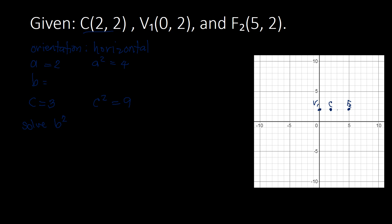We are going to solve for B squared. Based on the Pythagorean theorem related to hyperbolas, C squared equals A squared plus B squared. Rearranging, B squared equals C squared minus A squared. Plugging in the values: B squared equals 9 minus 4, which gives us B squared equal to 5.